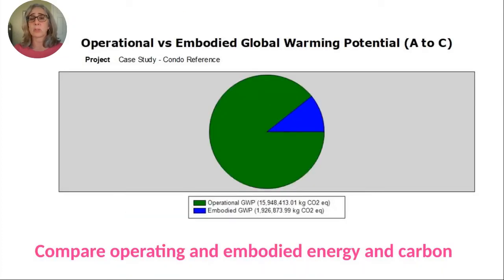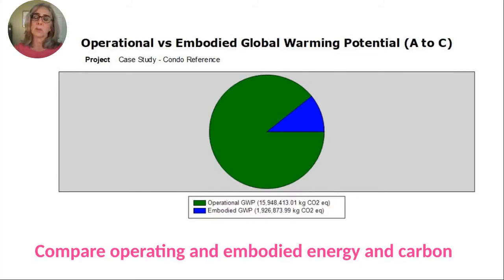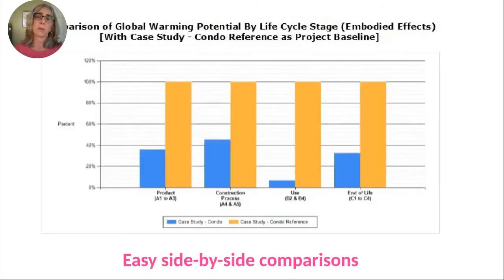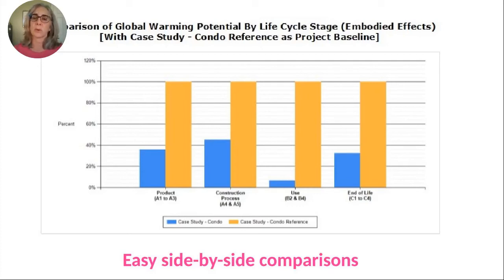If you chose to enter operating energy for the project, you can compare operating and embodied impacts. You can also easily compare two projects side by side — maybe there's a baseline project and you've done improvements and want to see how much better it is. Because this is a primary purpose of LCA, it's a really important feature of the software.